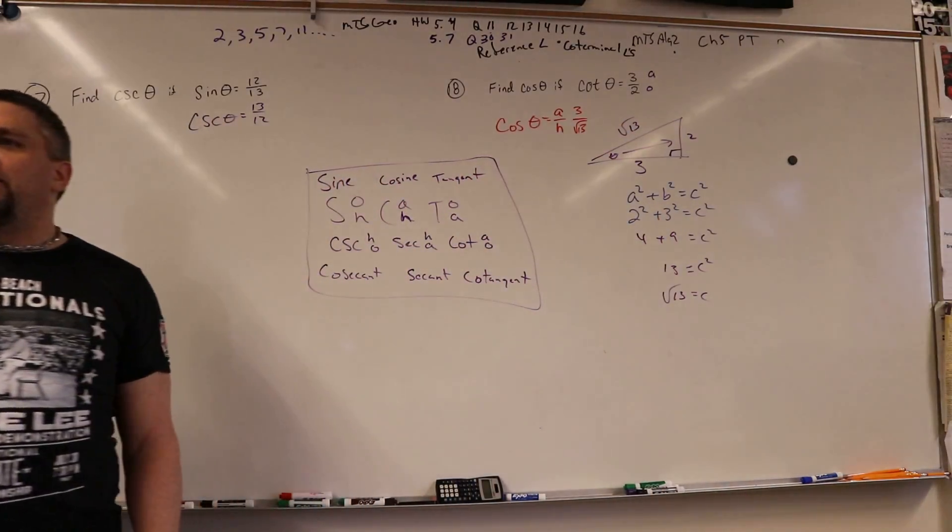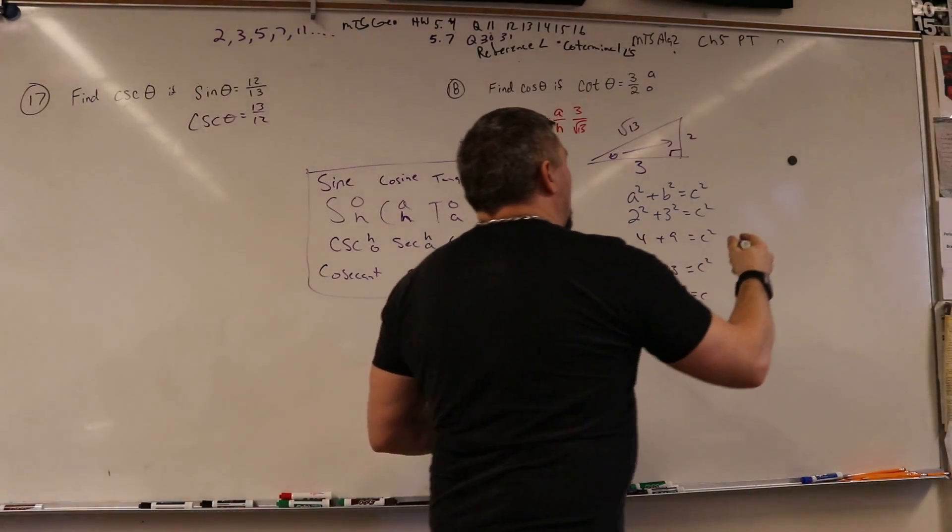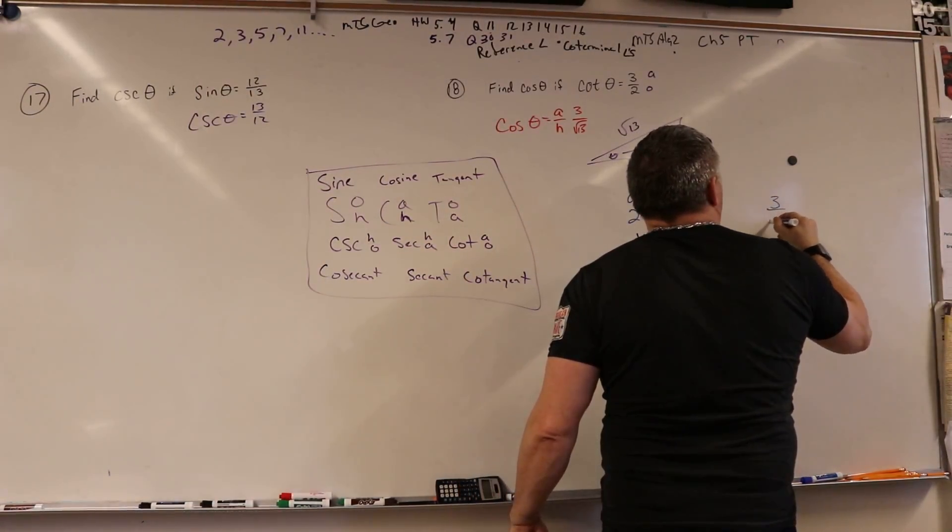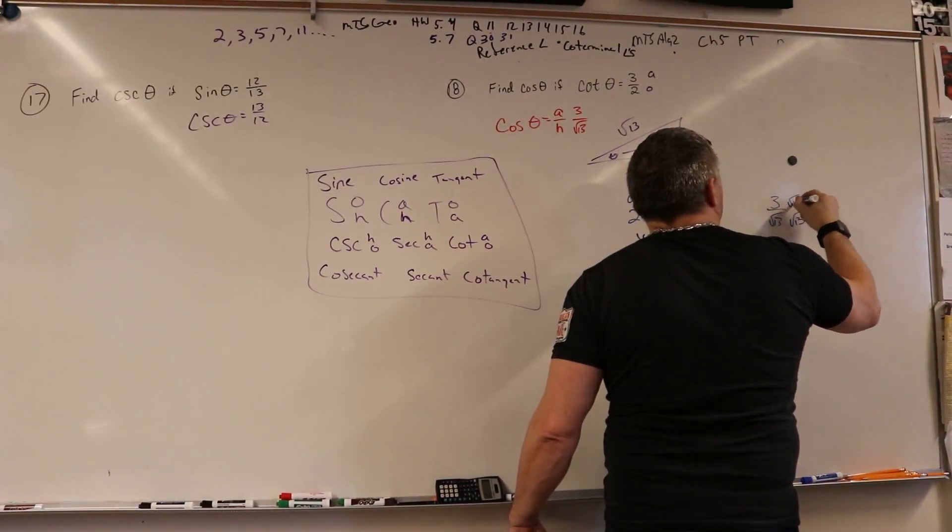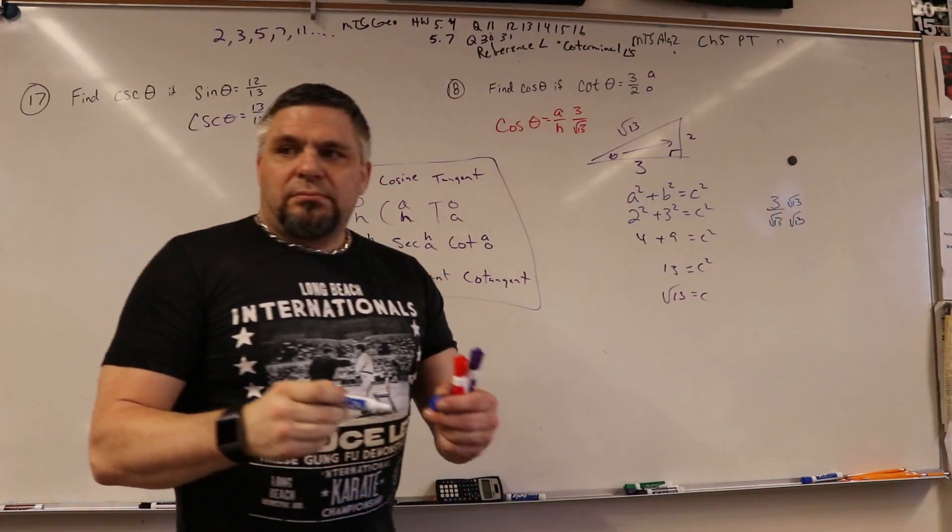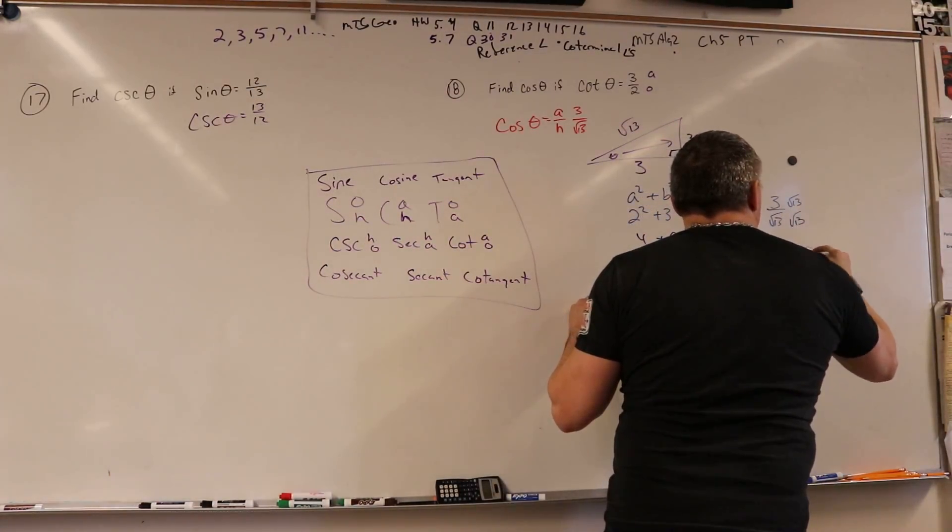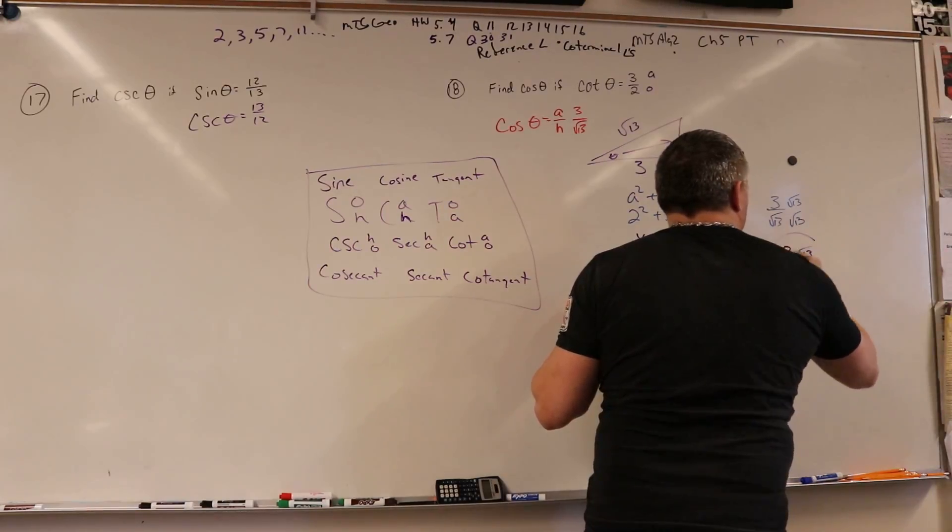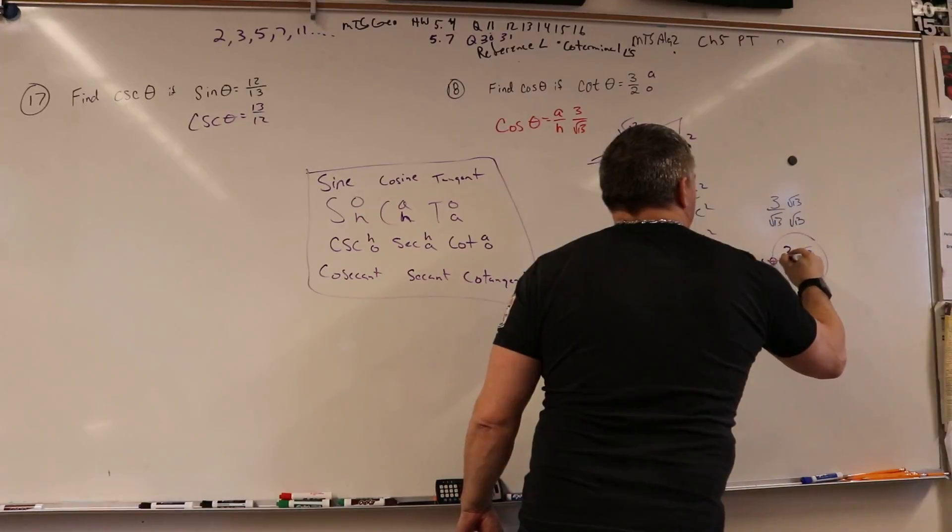But what's the problem with that one? We can't have the square root in the bottom, right, right. So we're ending up with 3 square roots of 13 over 13. So that's going to be your cosine of theta.